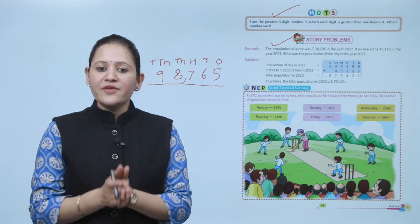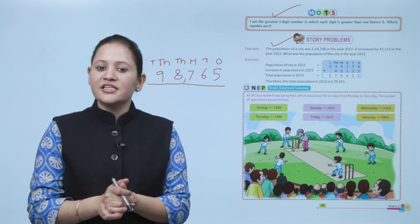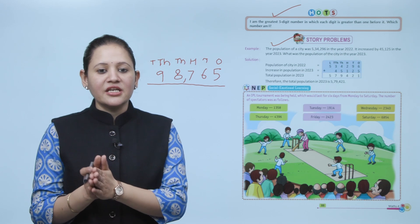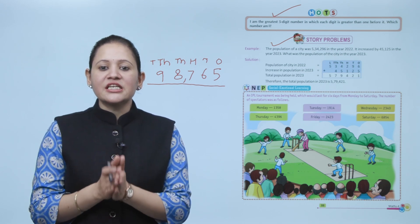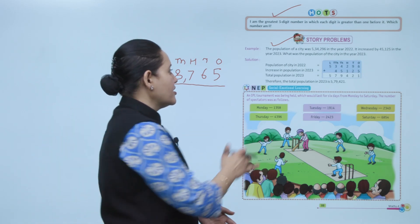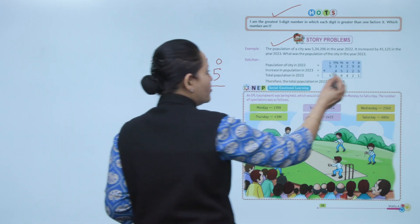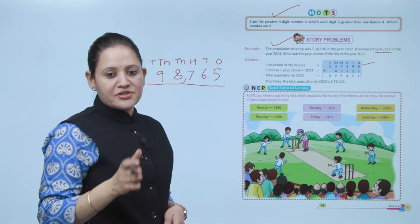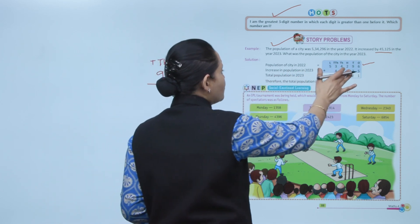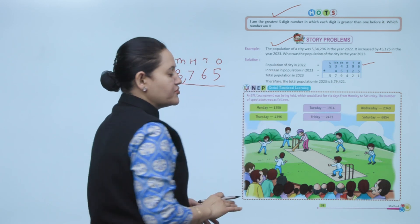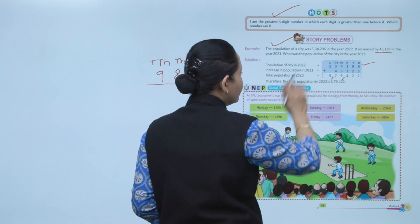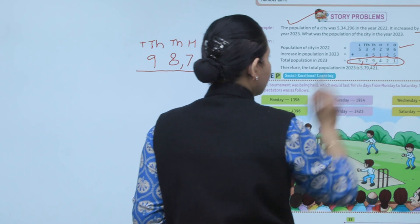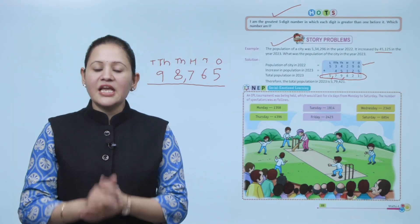Next is story problems. The population of a city was 5,34,296 in the year 2022. It increased by 45,125 in 2023. What was the population in 2023? Solution: population in 2022 was 5,34,296. Adding 45,125, we get 5,79,421. That is the population of the city in 2023.